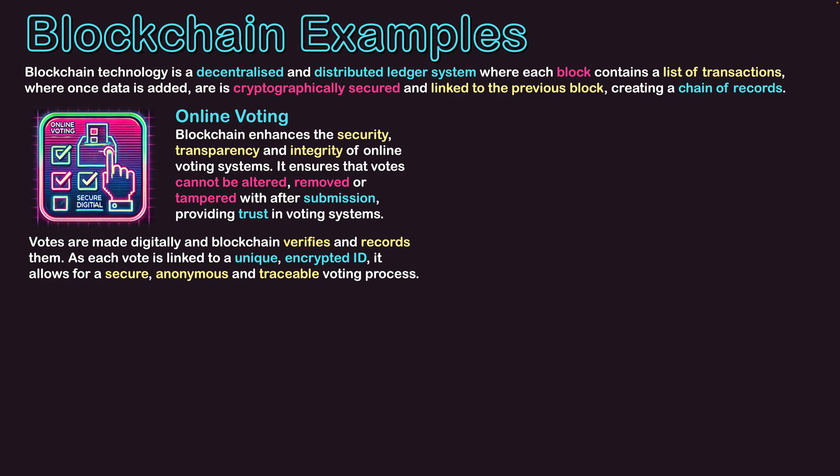If online voting is happening over a network such as the Internet, this ensures that once a person has made their vote, their name is attached to it, it has who they're voting for, and it's timestamped. Once submitted, it moves to the area where votes are going to be tallied and it can't be changed in transit. Votes are made digitally and blockchain verifies and records them, as each vote is linked to a unique encrypted ID, allowing for a secure, anonymous and traceable voting process.